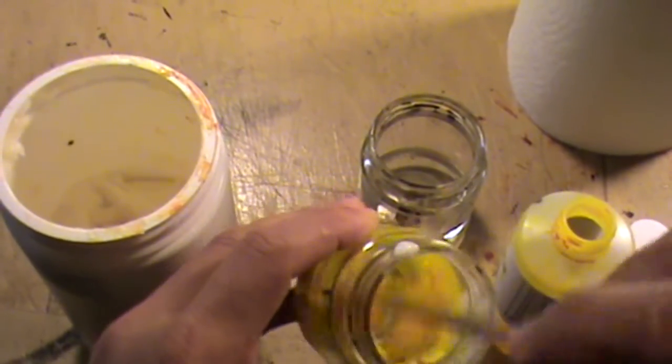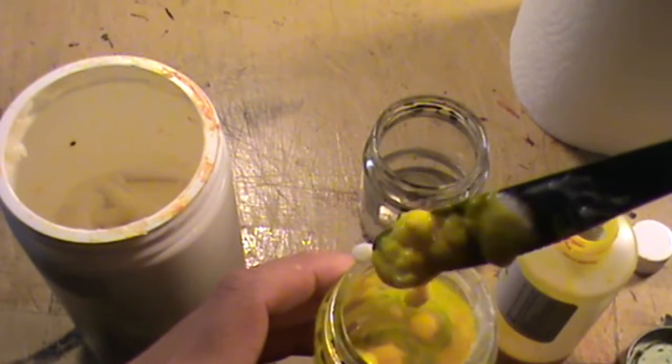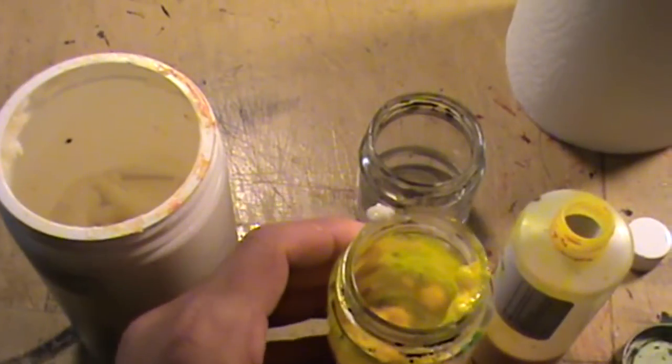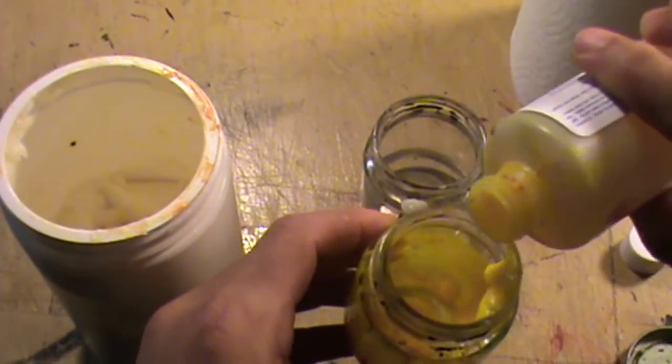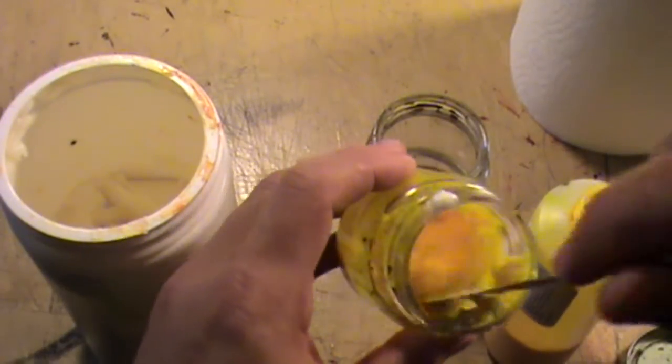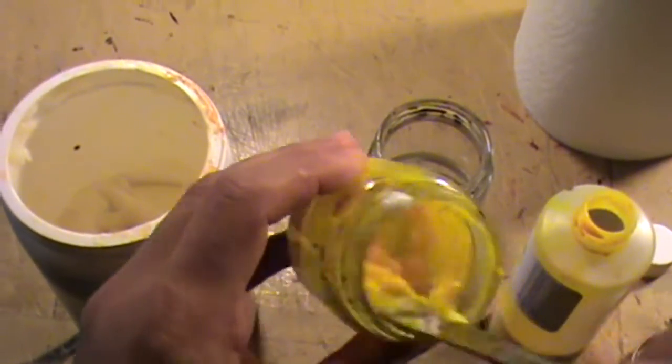So mix vigorously. Notice it's still sticky, so we need more liquid in there. I'm going to add more yellow paint. Once again, mixing thoroughly. And it's still quite sticky.